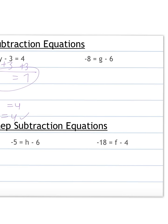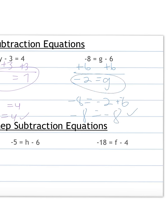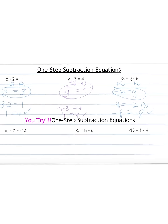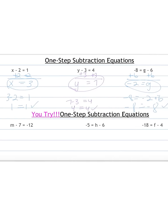Next: negative 8 equals g minus 6. We have our equation — now we need to isolate our variable by adding 6 to both sides, since we were subtracting 6 we do the inverse. Carry down the g. Negative 8 plus 6 is negative 2. So now I can go back and plug that in as a check. Negative 8 equals negative 8 — so our answer of negative 2 does work. Just like addition, but now we're doing the inverse of subtraction, which is addition.